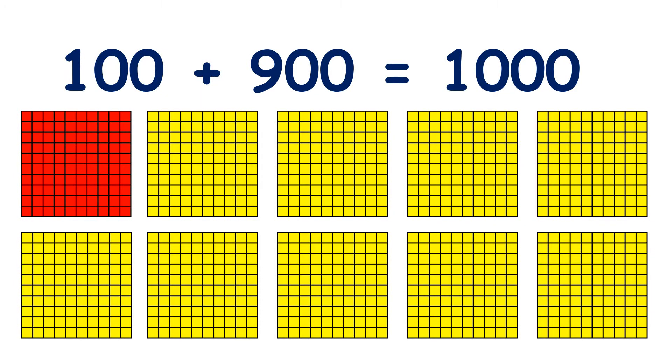We know that ten hundreds is the same as one thousand. So one way to make a thousand is one hundred plus nine hundred.